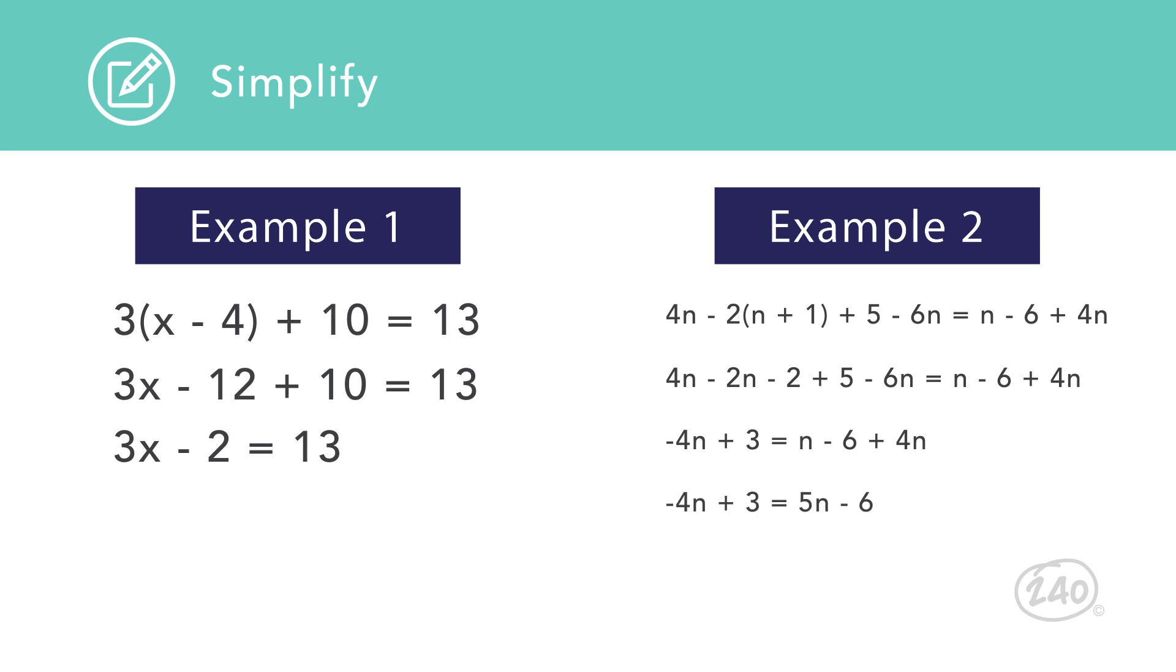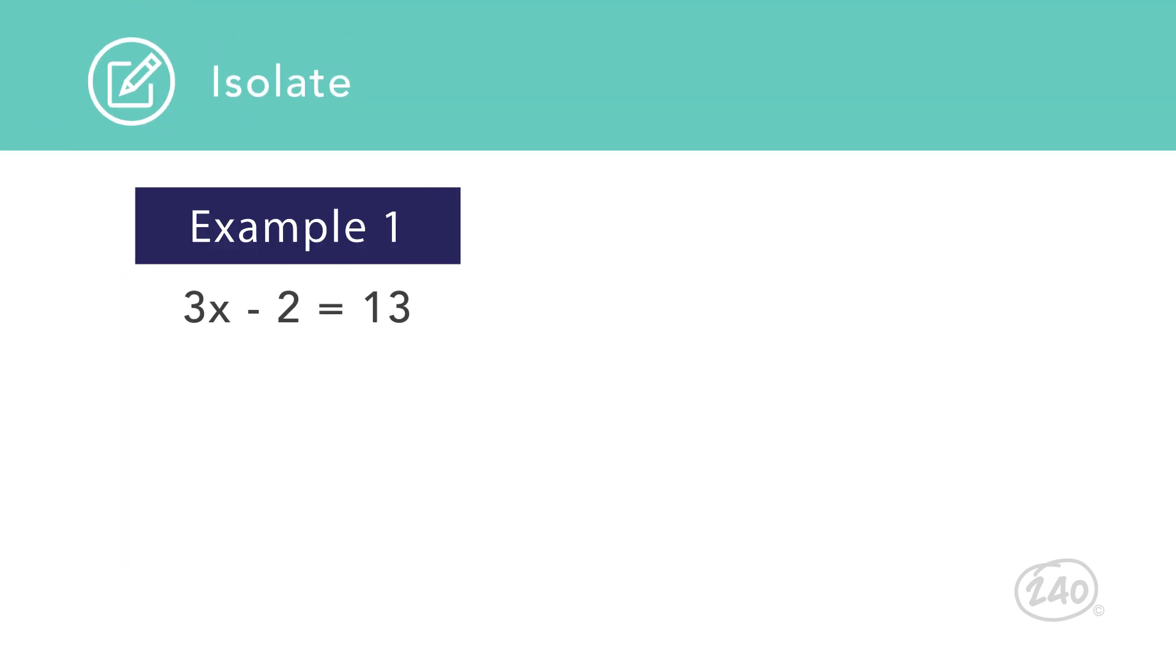Once each side of an equation has been simplified as much as possible, the process of solving can begin using inverse operations. Example 1 is solved as a two-step equation. A line drawn down the center of the equal sign reminds us that whatever operation is applied to one side must be applied to the other.